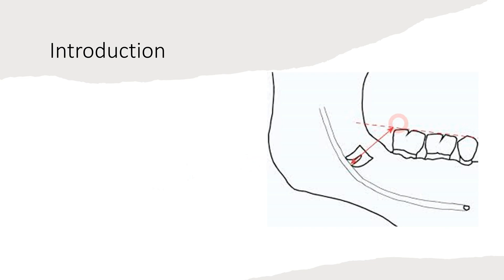When third molars are impacted, they can be vertically or horizontally impacted — there are different types of impactions. The most common approach to extract them, whether upper or lower, is surgical extraction where you expose the overlying mucosa and extract the tooth out.